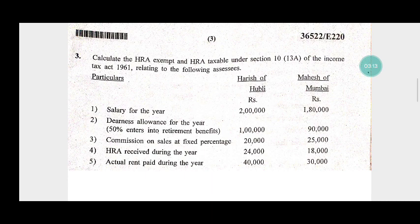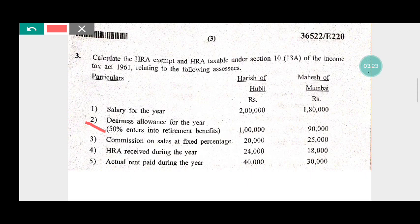The dearness allowance for the year is given in brackets — 50 percent enters into retirement benefit. When we are calculating the working note, we need to consider only 50 percent of Rs 1,90,000. So 50 percent of Rs 1,90,000 equals Rs 95,000. Only that portion is considered. Let us solve the problem.